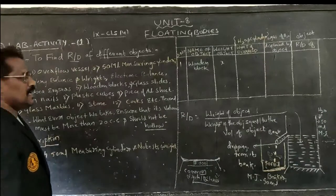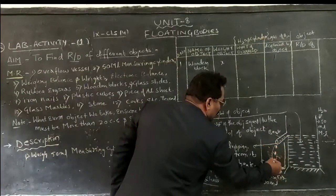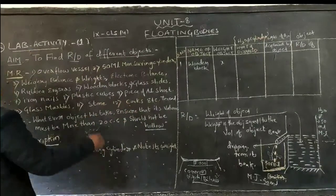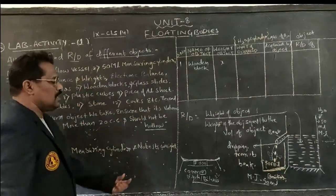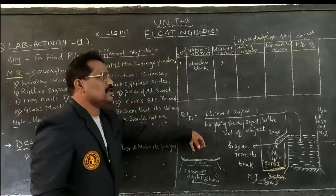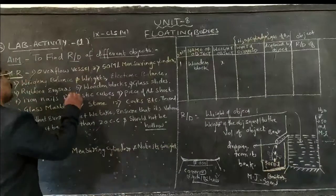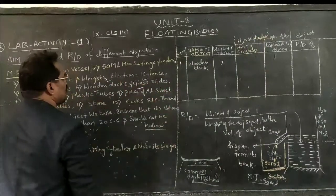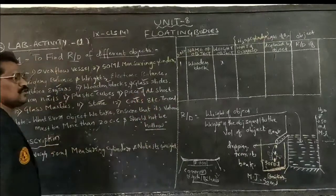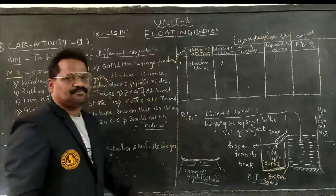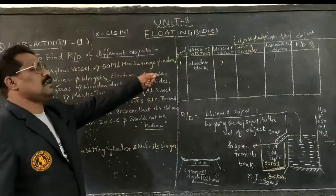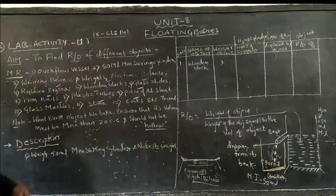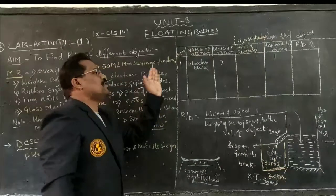The second item is a measuring jar or beaker of 50 ml, which collects the overflow water. Third, a common balance or digital balance is used to measure the weight of different articles such as wooden blocks, rubber erasers, glass slides, iron nails, plastic cubes, pieces of aluminium sheet, marbles, stones, cork, etc. An electronic balance can also be used.